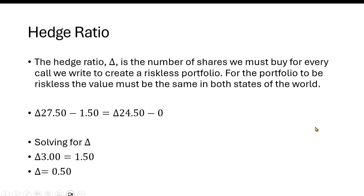What we want to do is find that delta, what we call the hedge ratio, that creates a riskless portfolio for us. And it tells us how many shares we have to buy of the stock for every call that we write to make the portfolio riskless. A riskless portfolio would be the case where it doesn't matter what the stock price does because the value of the portfolio is the same. So, this is the value in the upstate. Delta $27.50 minus $1.50 equals delta $24.50 minus zero. Solving for delta, we get that delta equals 0.5, or a half. So, you should buy half a share of stock for every call you write.